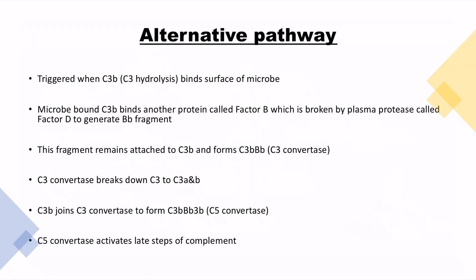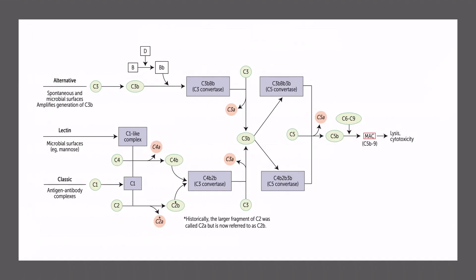The next is the alternative pathway. This is triggered when C3B after C3 hydrolysis binds to surface of microbe. C3B is attached to the surface of microbe. Microbe bound C3B will bind another protein called factor B. Factor B is broken by a plasma protease called factor D and then it leads to generation of Bb fragment. C3B will bind Bb complex to form C3 convertase. C3 convertase will convert again C3 to C3A and C3B and further the whole process is exactly the same.